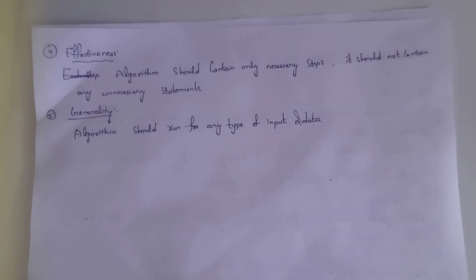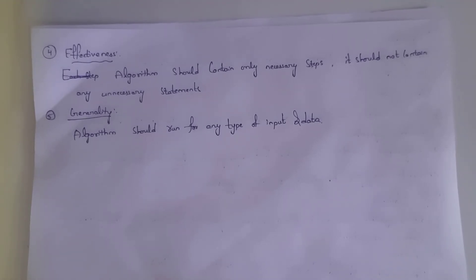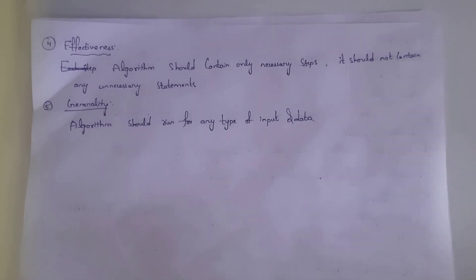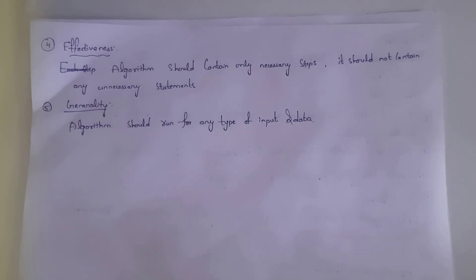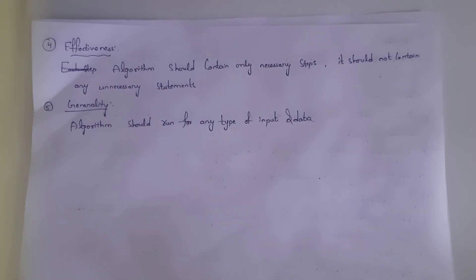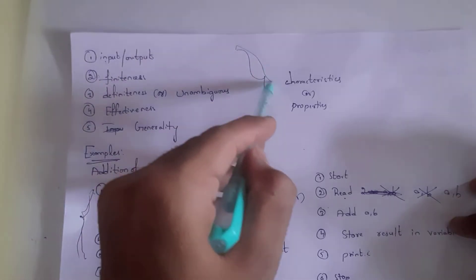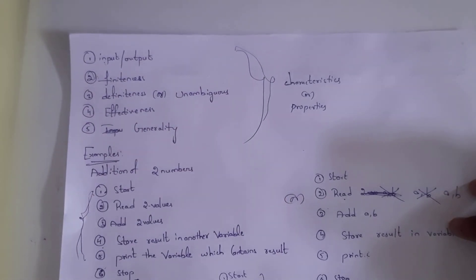The fourth property is Effectiveness — an algorithm should contain only necessary steps and no unnecessary steps. The fifth and final property is Generality — an algorithm should work for any type of input or data given to it. These are the five properties, or characteristics, of an algorithm.